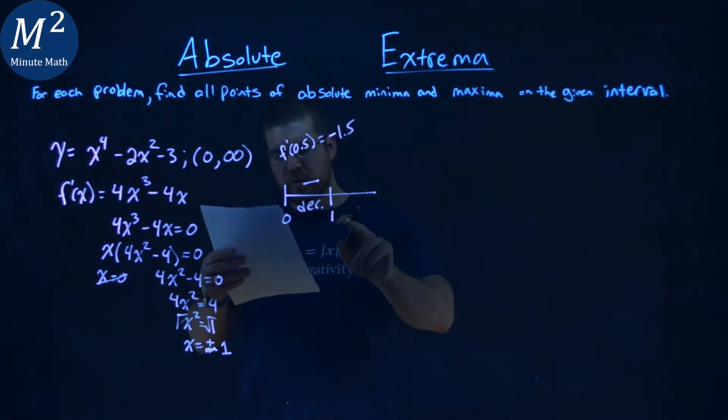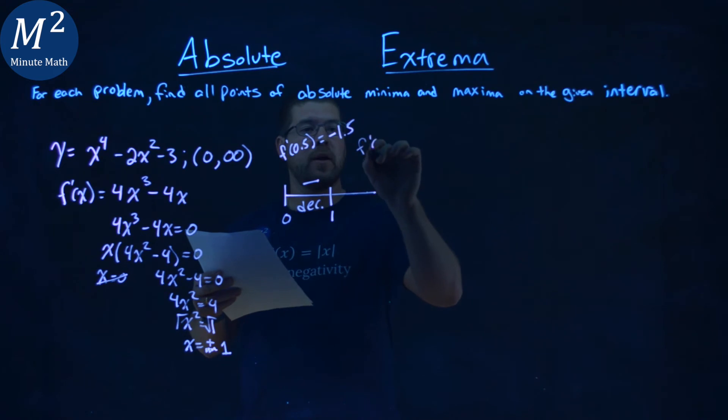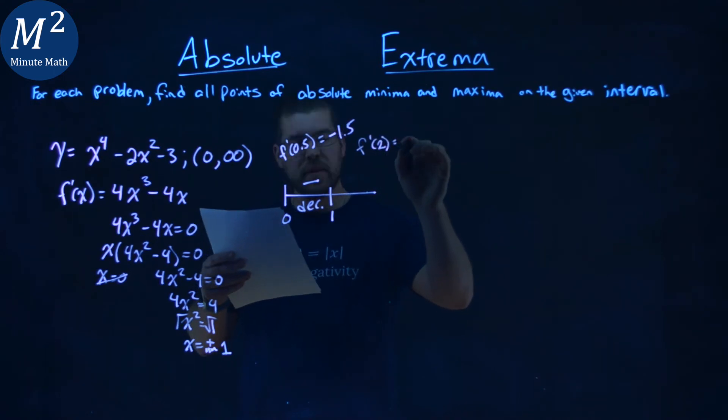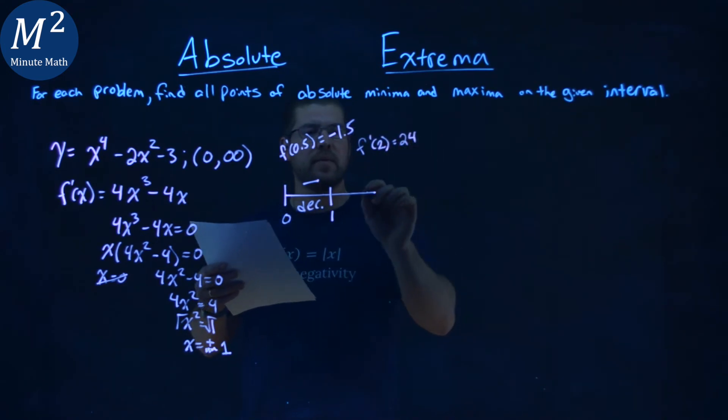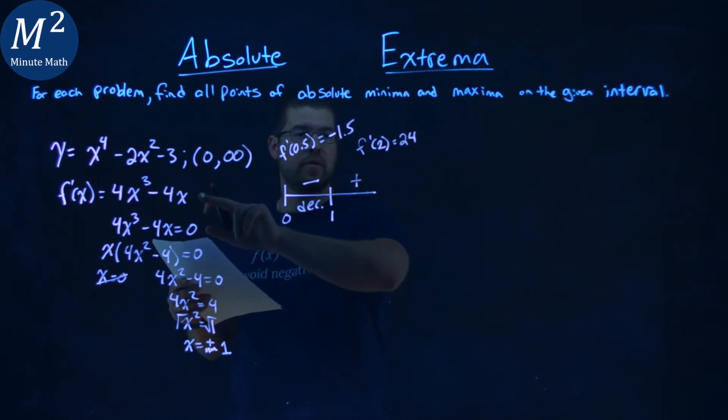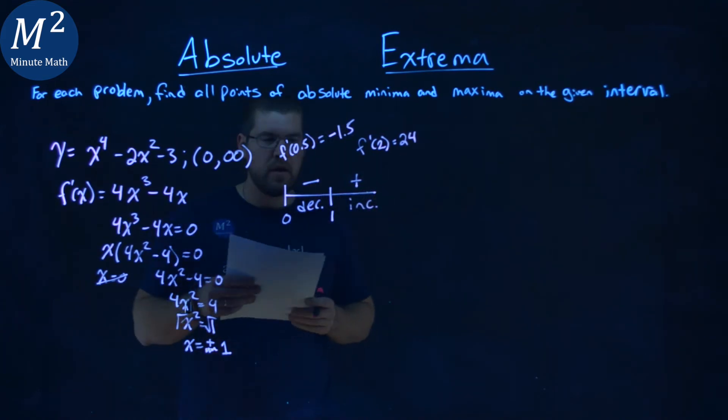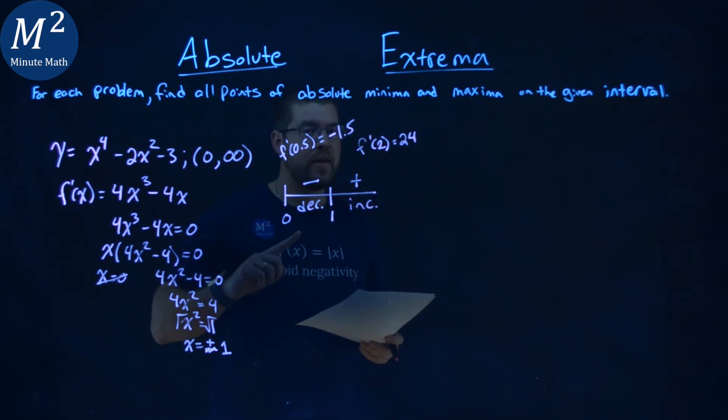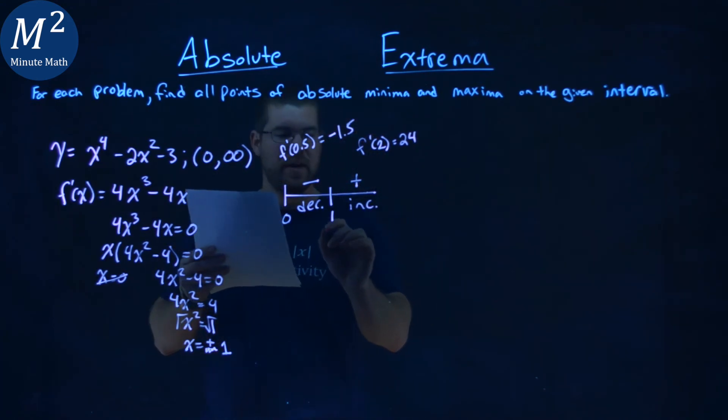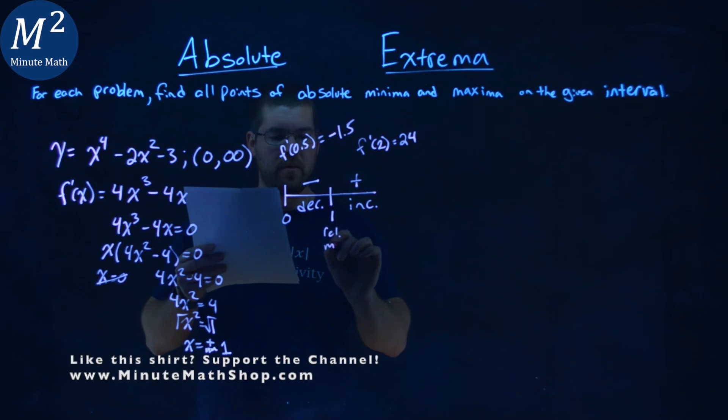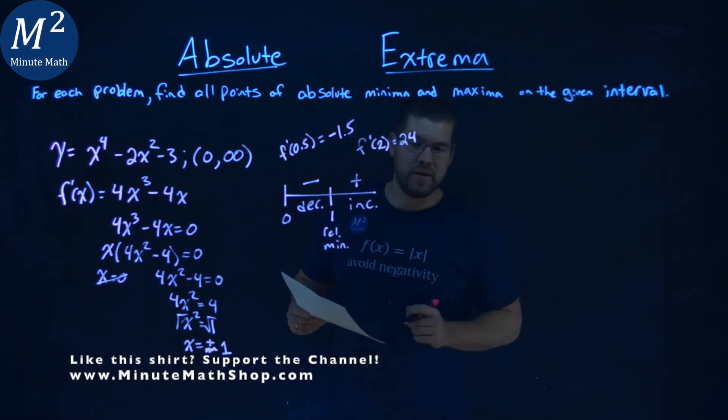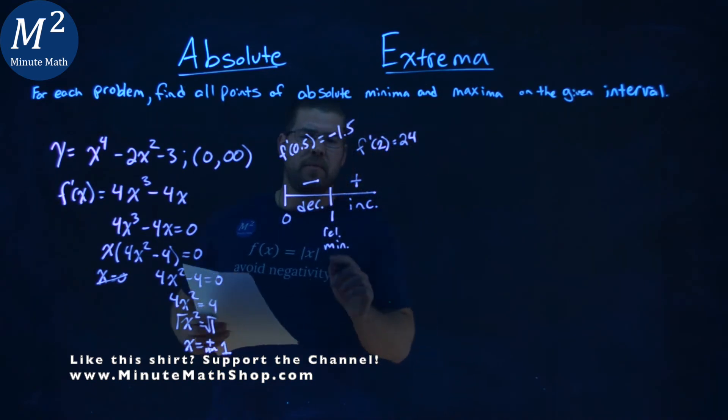I picked a value that was larger than 1, and I picked 2, so f prime of 2 within the interval, and that's 24. It's positive, so we're increasing. So, our function is decreasing, then increasing at 1. We have a relative minimum there. I wrote maximum on paper. That would be incorrect. So, we're decreasing there to increasing.